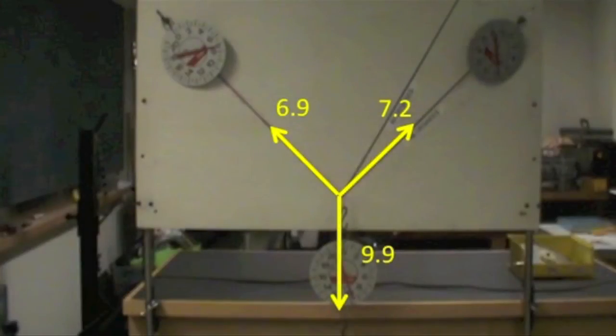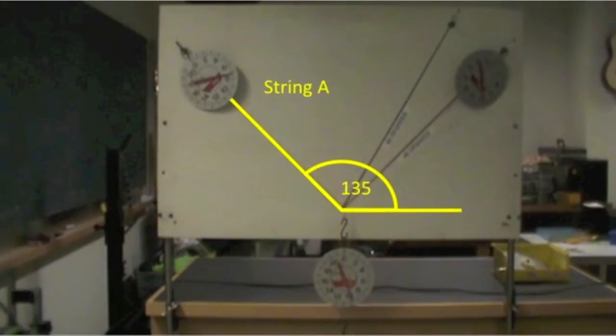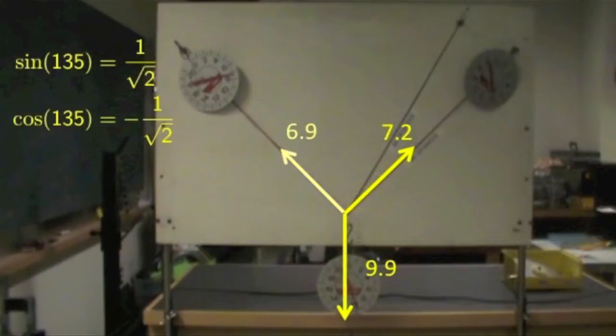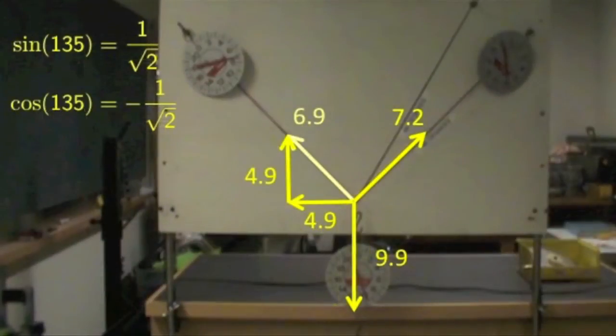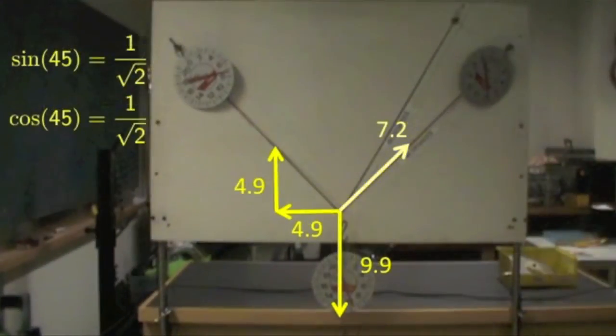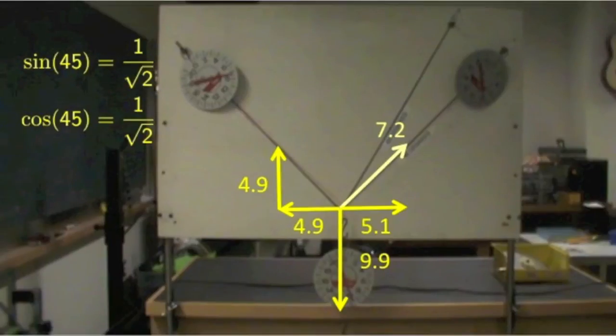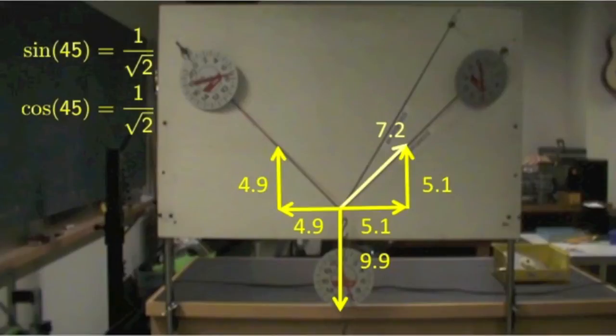We want to see that the forces sum to zero. To do this, let's decompose the forces into horizontal and vertical components. We use the fact that string A is at a 135 degree angle. Because the magnitude of sine 135 and cosine 135 are both 1 over the square root of 2, we simply need to divide by the square root of 2. We find that the horizontal and vertical components of this tension force are approximately 4.9 Newtons. Because sine 45 and cosine 45 are both equal to 1 over the square root of 2, we divide by root 2 and find that the components of the tension force on string B are both equal to about 5.1 Newtons.